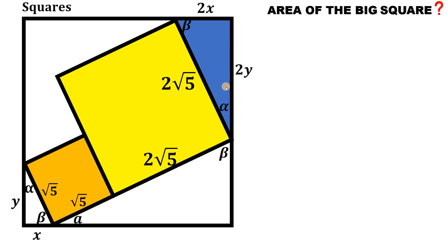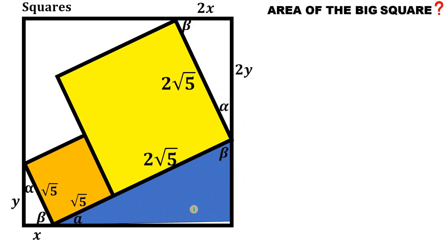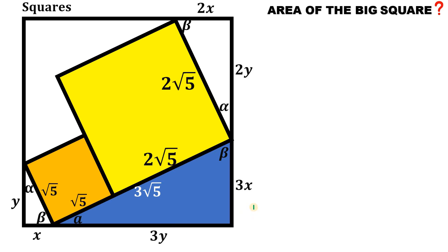Now, from here, let's have this third right triangle, which is similar to these two. The question is, what is the length of this hypotenuse? It is square root of 5 plus 2 times square root of 5, which is simply equal to 3 times square root of 5 — that is 3 times the hypotenuse of this small right triangle. Meaning, its shorter leg is just 3x and the longer leg is 3y.